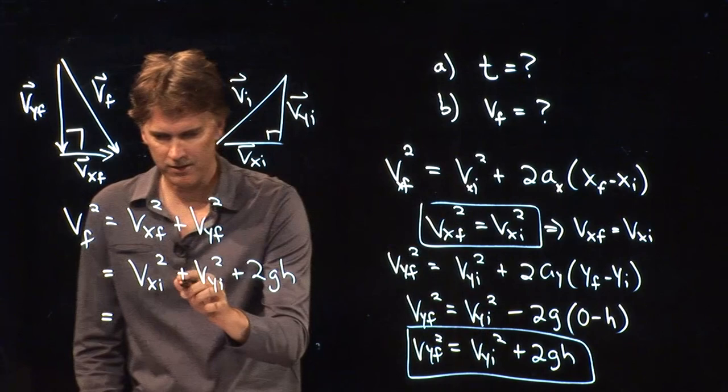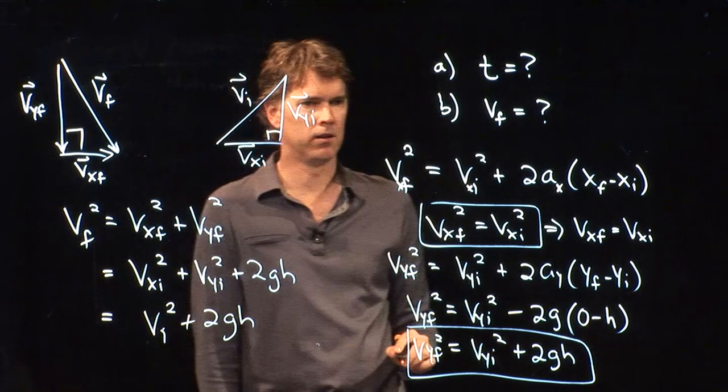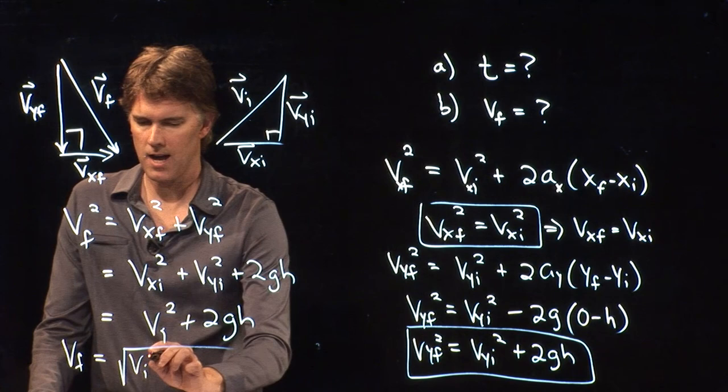And so guess what? Vxi squared plus vyi squared is just vi squared. And now we just have to add 2gh. And we know all of those numbers. So now we can plug it in and see what we get.